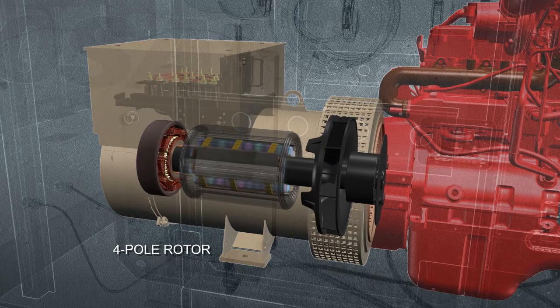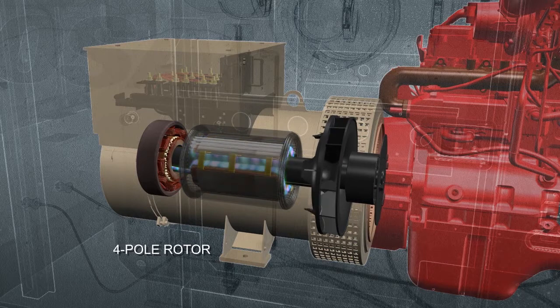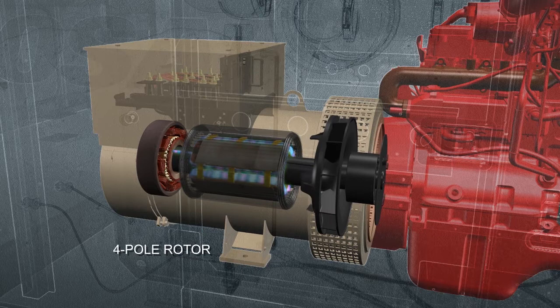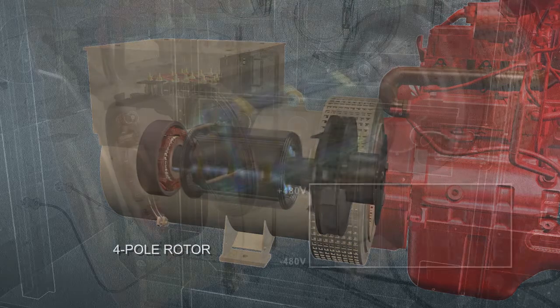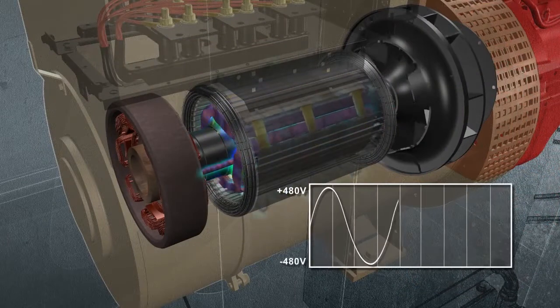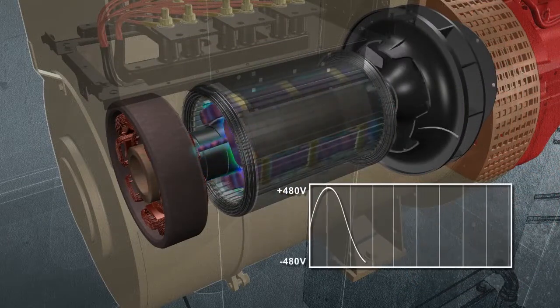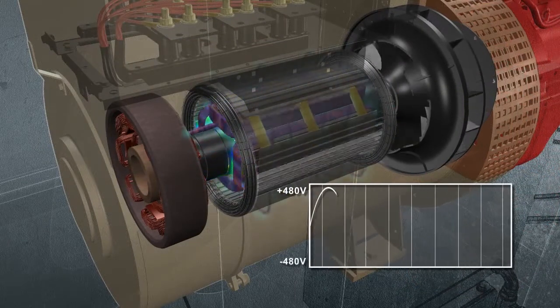When voltage passes through the rotor coils, it creates an electromagnetic field. As the rotor spins, its magnetic field cuts across the stator's conductive wire and generates voltage. Because the magnetic field builds and subsides, voltage fluctuates between positive and negative peaks, which is known as alternating current.